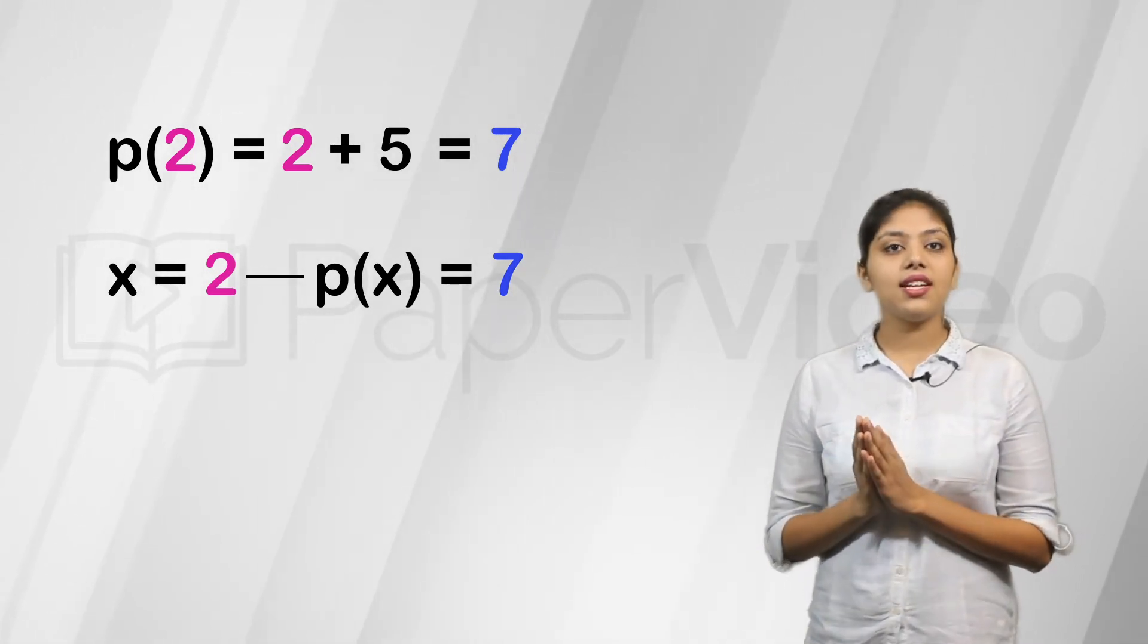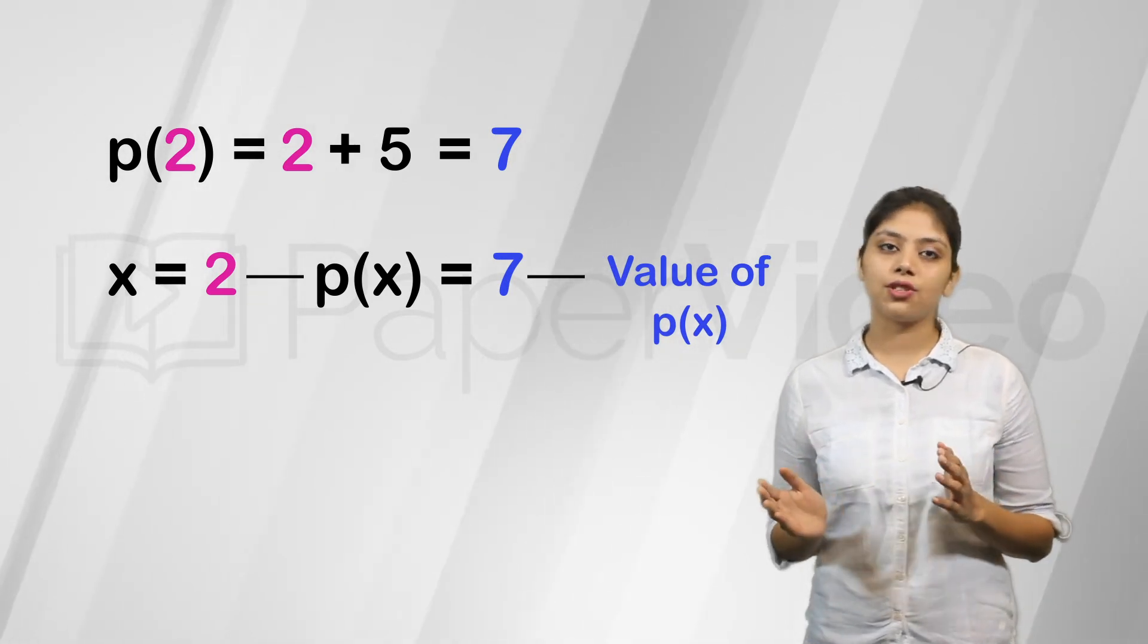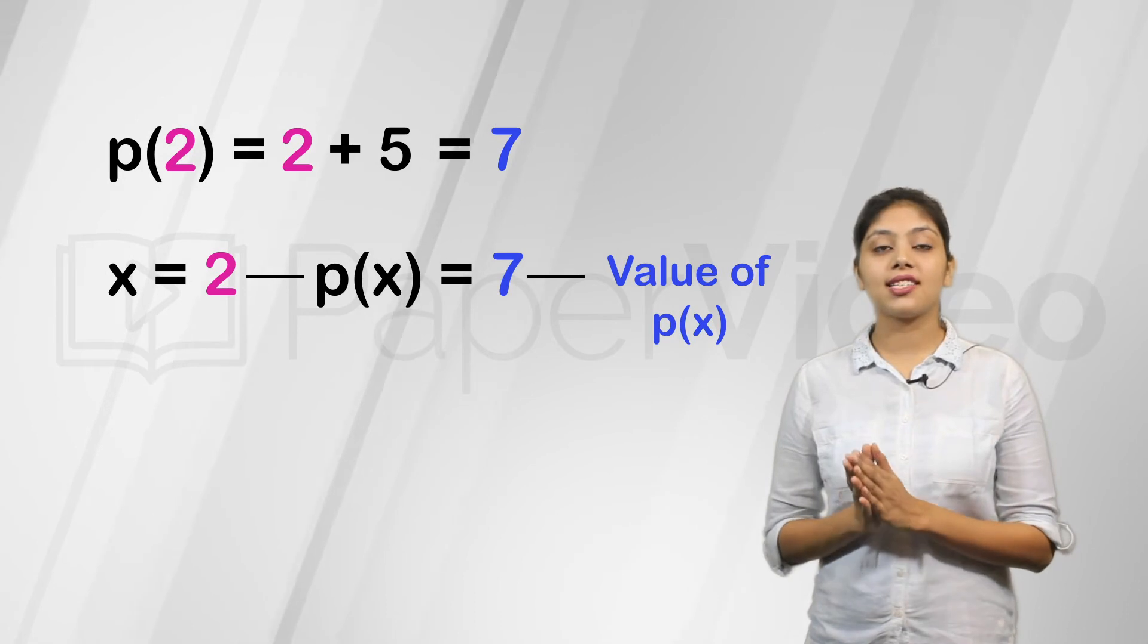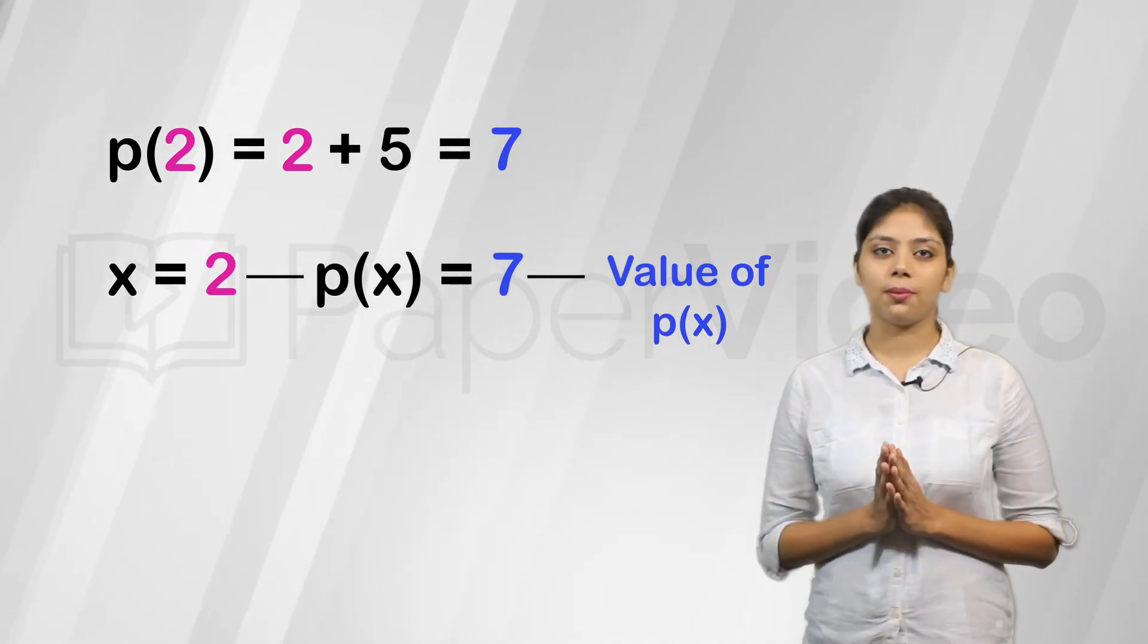Therefore, 7 is known as the value of polynomial p of x when x equals 2. Thus, value of a polynomial is a number obtained when x is replaced by a number in the polynomial.